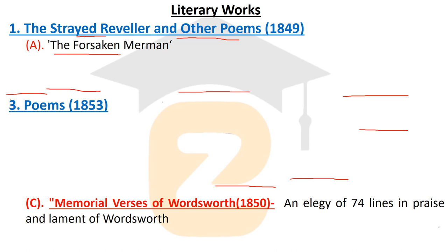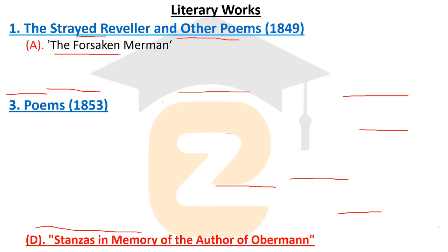Next is Memorial Verses, written in memory of Wordsworth and published in 1850, then included in the 1853 Poems volume. It is an elegy of 74 lines in praise and lament of Wordsworth — a kind of tribute given to Wordsworth by Matthew Arnold. It was composed in 1850, the year Wordsworth died.